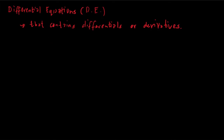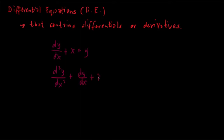For examples of differential equations, we have: dy/dx plus x is equal to y. We can also have the second derivative of y in terms of x, plus dy/dx, plus 7x is equal to 3. We can also write this using prime notation: y double prime plus y prime plus 7x is equal to 3.